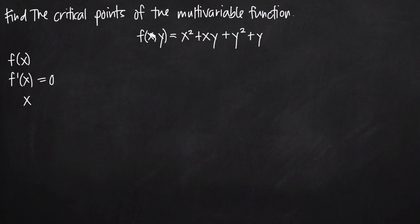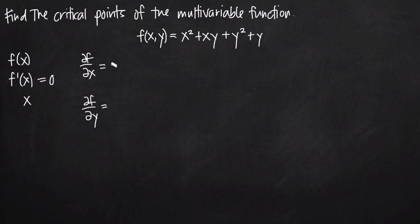To find the partial derivatives of f, we'll take the partial derivative of f with respect to x, and also the partial derivative of f with respect to y. When we find these two derivatives, we're going to set both of them equal to 0, and then solve those two equations as a system of simultaneous equations.